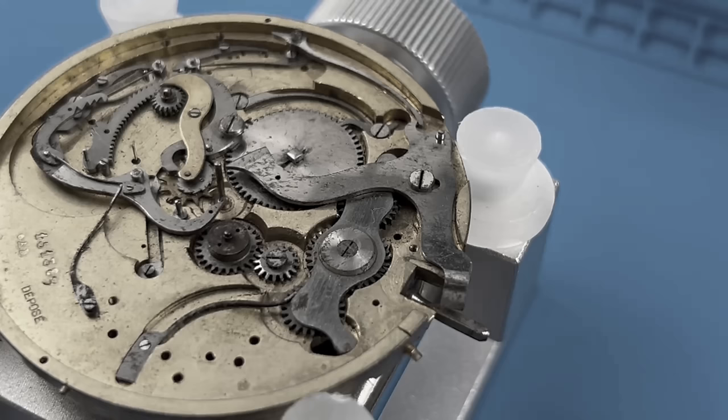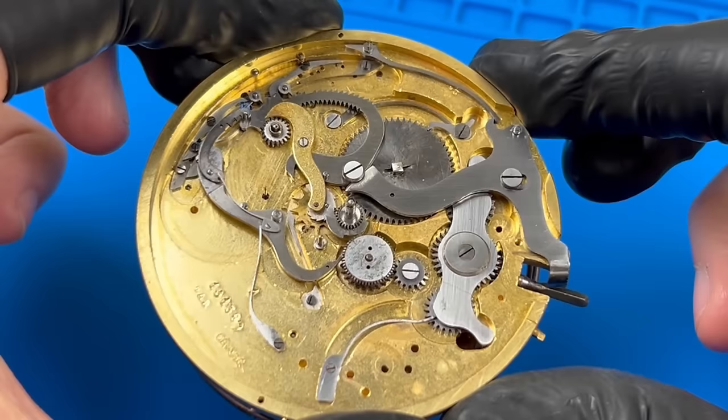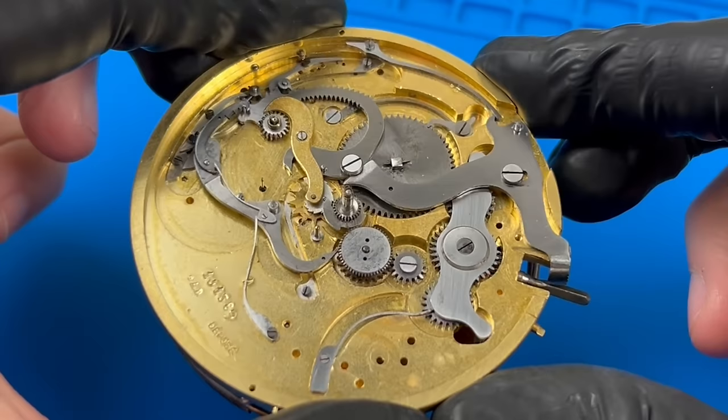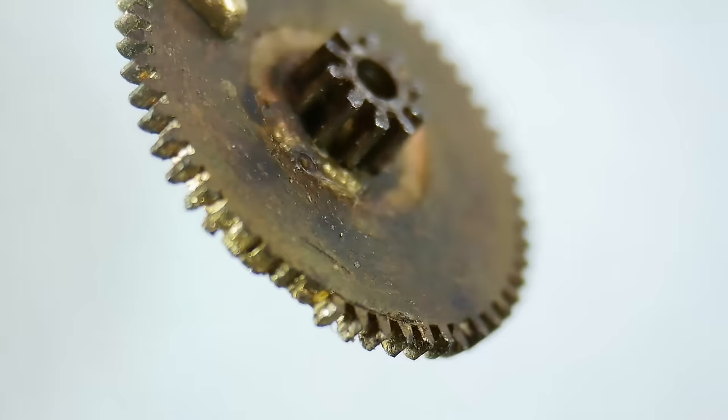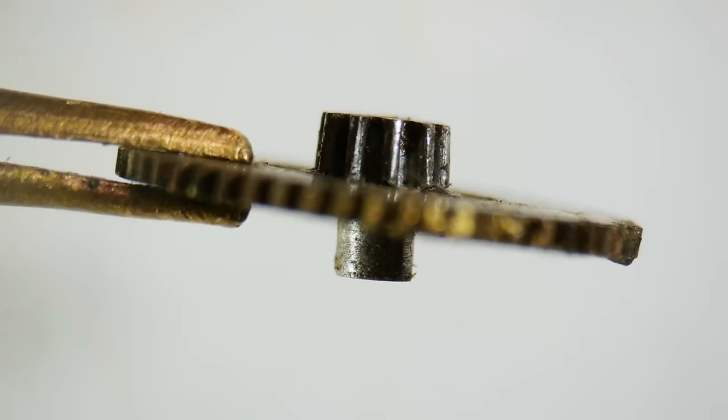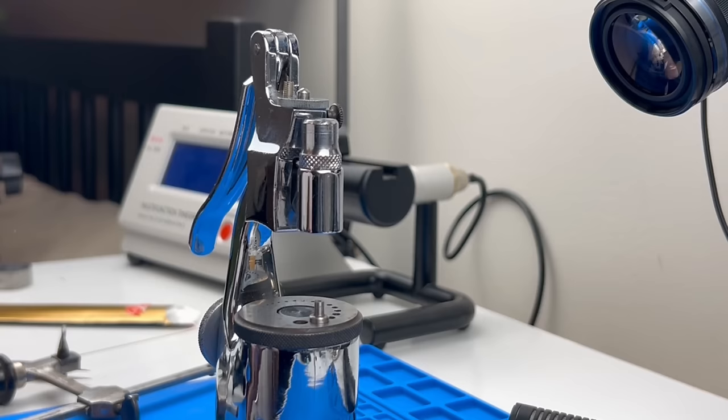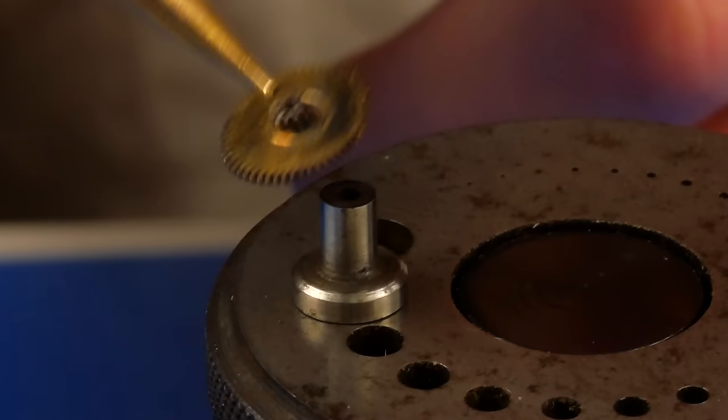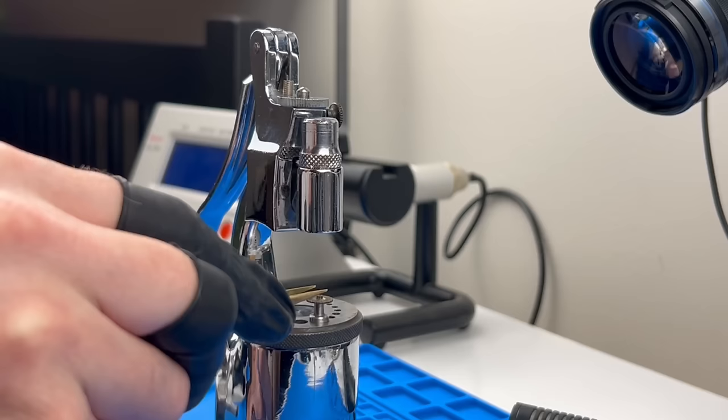Before going any further, let's just stop for a moment to appreciate the current state of the movement compared to where it started. Back to this minute wheel with the sheared off teeth and crooked arbor. There's no replacement for this, no donor movements available. I really have no choice but to figure out a way to repair it.